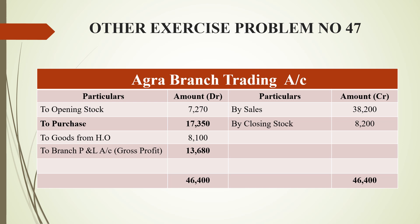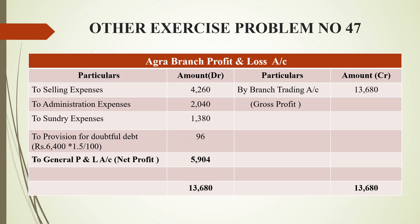In the branch profit and loss account, gross profit of 13,680 rupees is brought down from the branch trading account. On the debit side, indirect expenses are: selling expenses 4,260 rupees, administrative expenses 2,040 rupees, sundry expenses 1,380 rupees, and provision for doubtful debts calculated as 6,400 (debtors) × 1.5 ÷ 100 = 96 rupees.